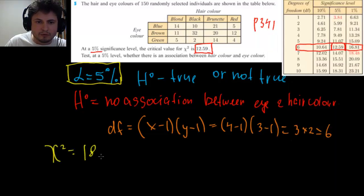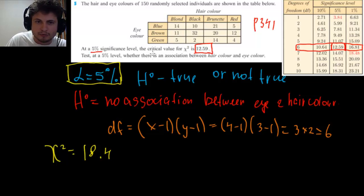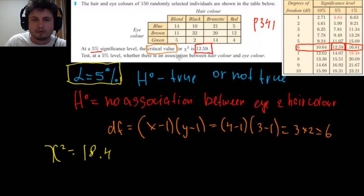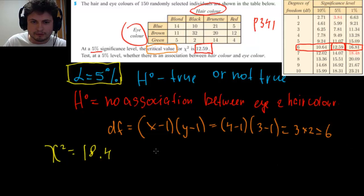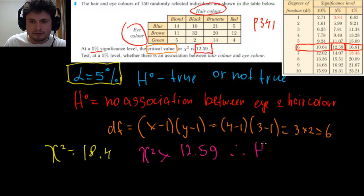So chi-square is 18.4, which is higher than our critical value. The critical value of 12.59 is the maximum chi-square for the values to be considered independent. As soon as chi-square exceeds this critical value, it means there is some kind of relationship or correlation between eye color and hair color. Therefore, our chi-square of 18.4 is higher than 12.59, so we reject our null hypothesis.